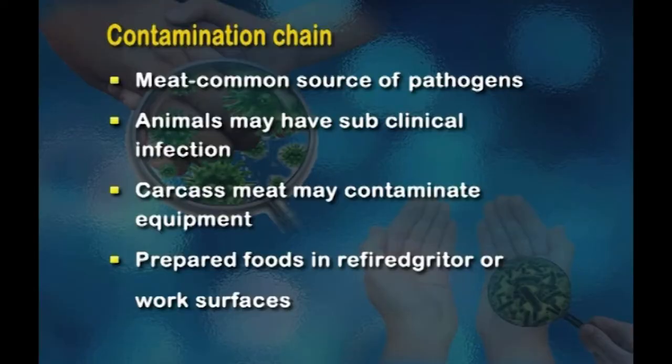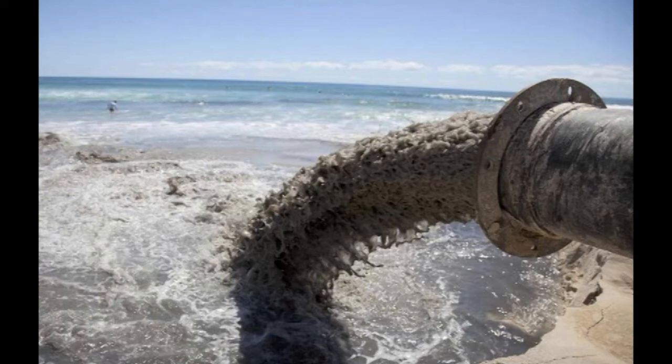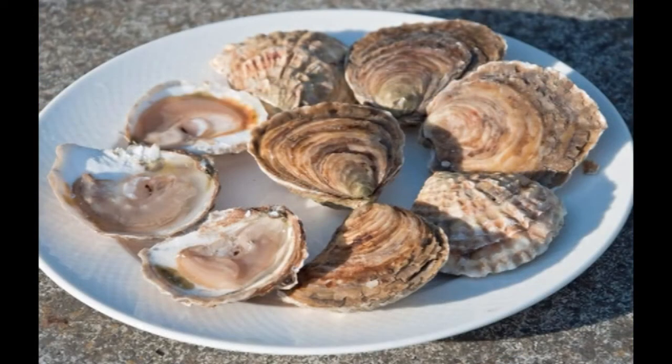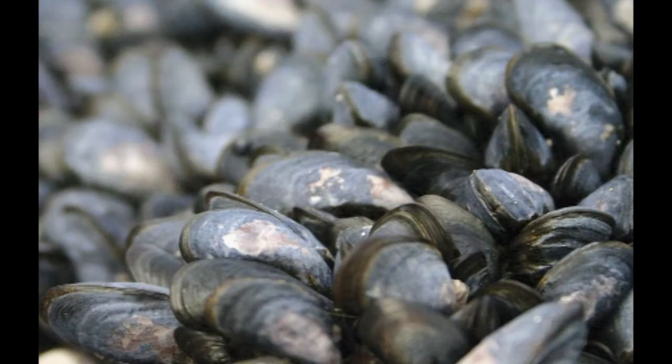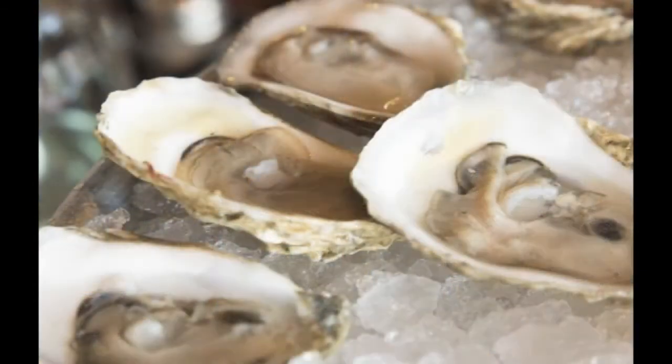Prepared foods in the fridge or on work surfaces should also be kept separately. Seafood can be a source of contamination — sometimes sea water gets polluted with sewage, and molluscan shellfish like clams and oysters, which filter sea water through their bodies to obtain food, may trap pathogenic microorganisms. If the molluscan shellfish meat is eaten raw or improperly cooked, it can spread organisms to the human being.